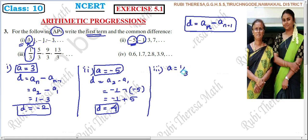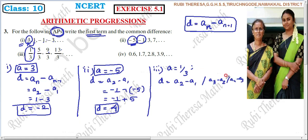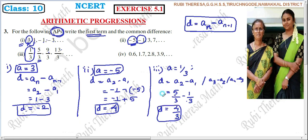A equals 1 by 3. The common difference D: second term minus first term, third term minus second term. Since the denominators are the same, we subtract only the numerators: 5 minus 1 equals 4. So D equals 4 by 3. And A equals 1 by 3.